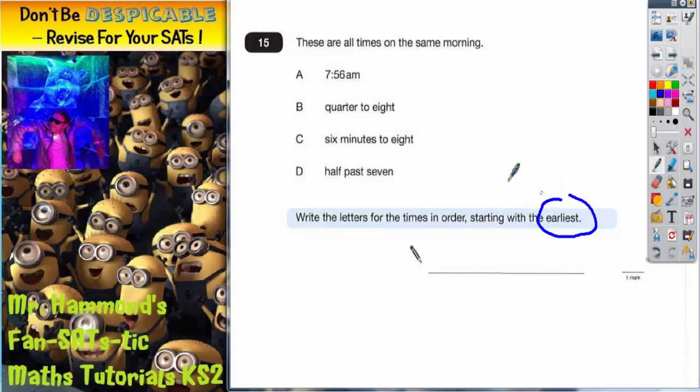Now the easiest thing to do is to turn these three into the same format as A. So we're looking for what it would look like on a digital clock. Quarter to 8 is 15 minutes to 8.